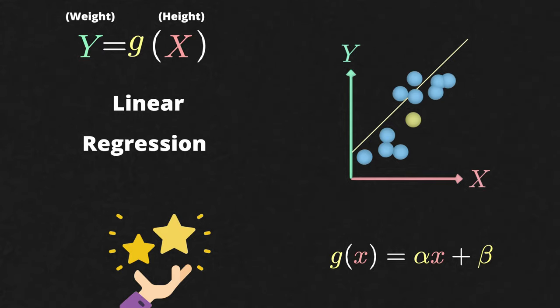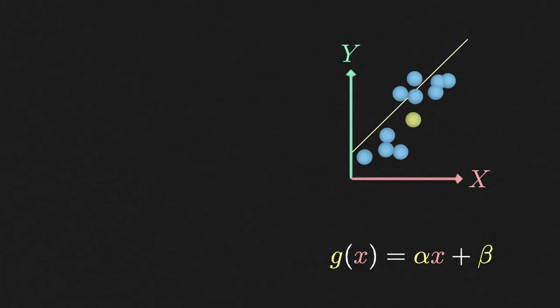To do linear regression we just need to pick the alpha and beta that makes this line fit the data as much as possible. One way to quantify the fit of a line to a bunch of data points is to consider where the point in the training data set is, and where it should be according to this line, take the square of the difference, and then take the sum over all data points.